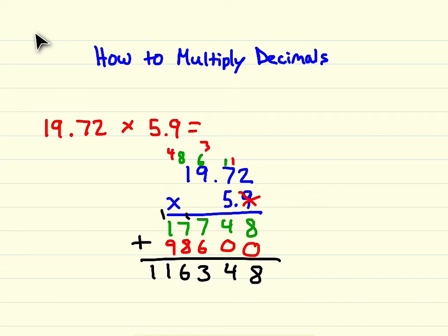So we get this answer of 116,348. And we know that's not right because we need to add our decimal in. To figure out where to put your decimal, you can do one of two things. Well, first off, let's see what actually would make sense.